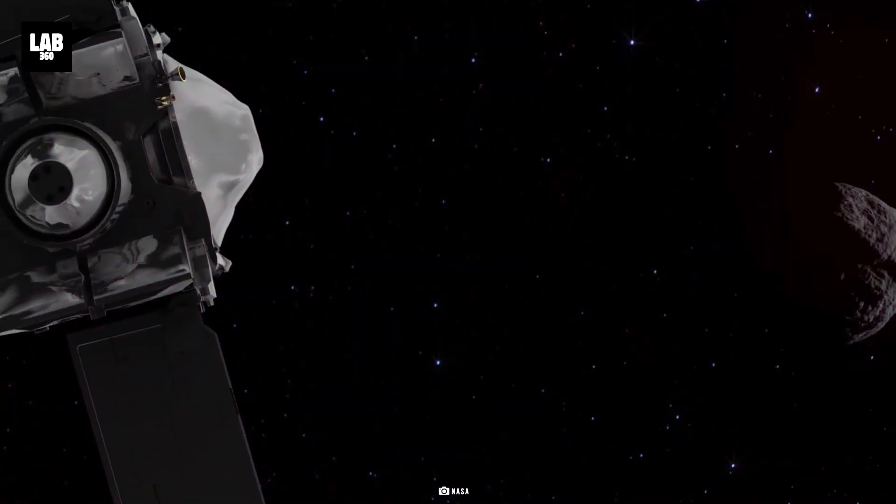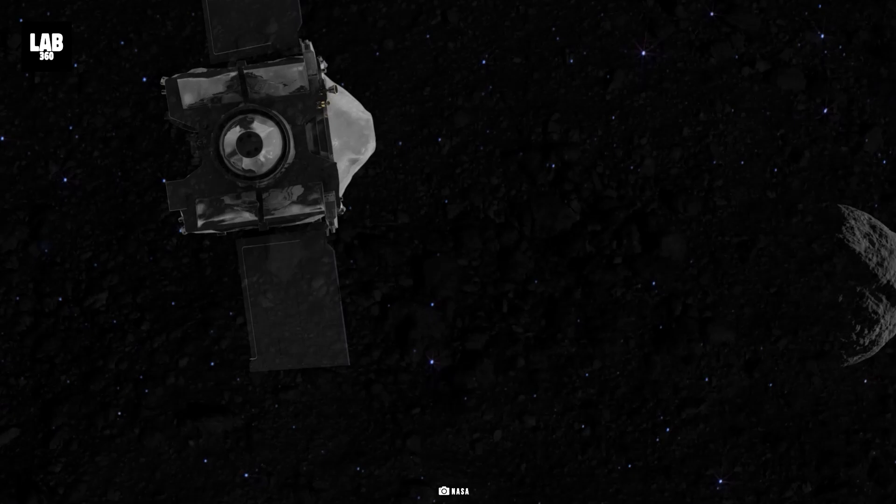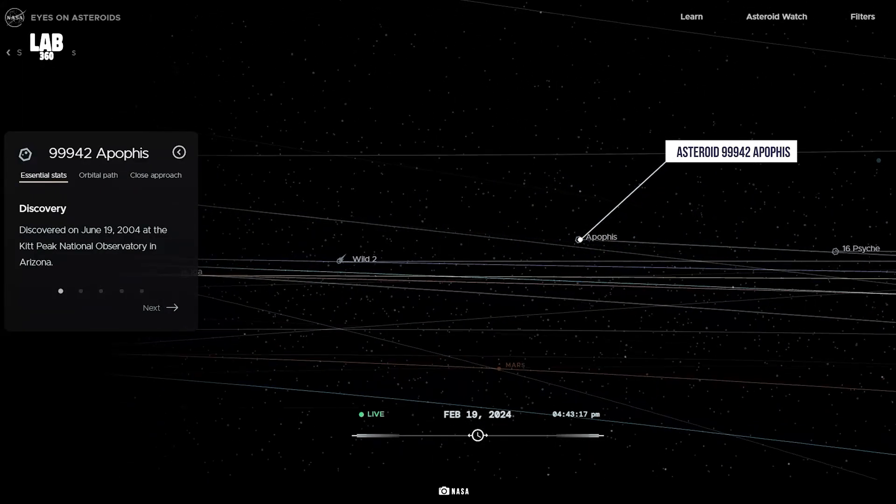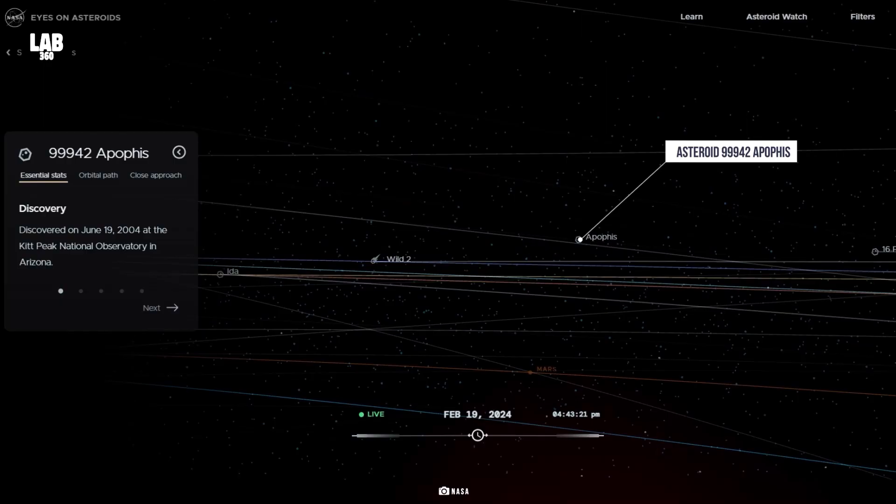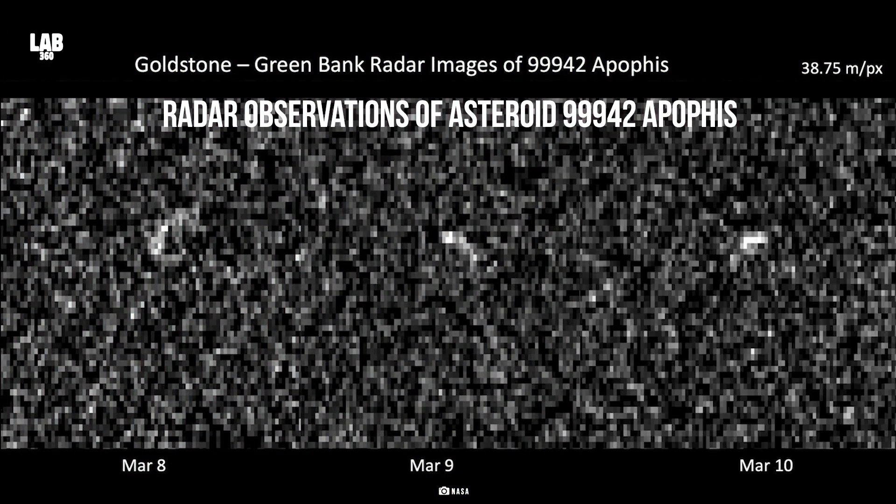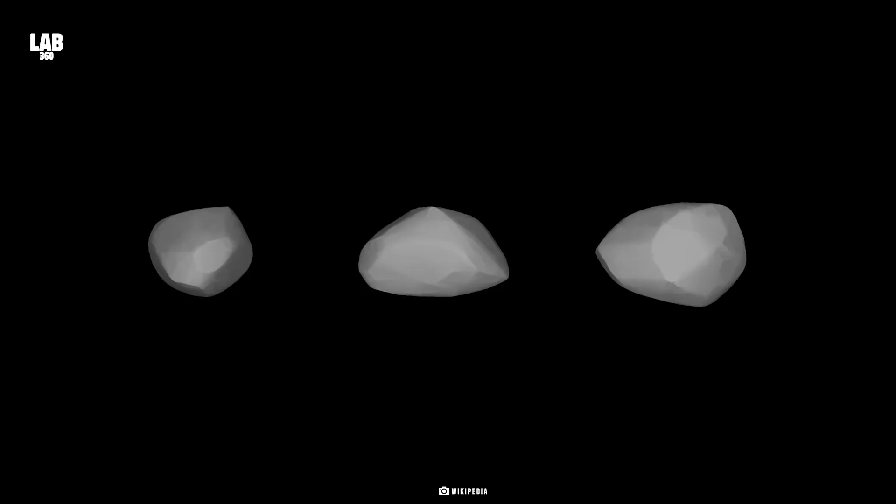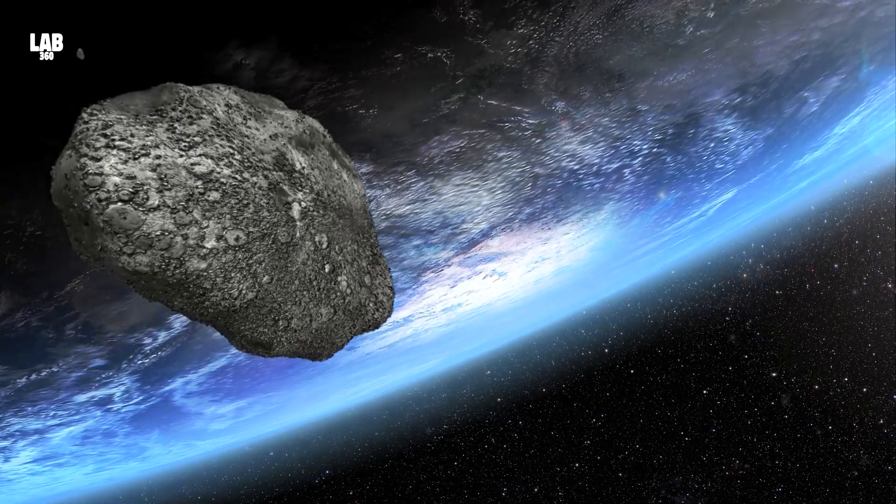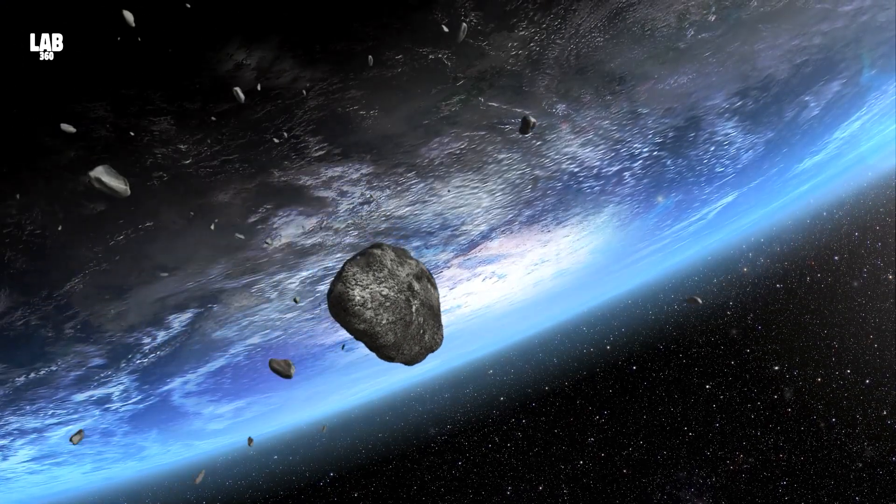The spacecraft after dropping samples from Bennu has been sent off to asteroid 99942 Apophis for sample collection. Another near-Earth object that will be uncomfortably close in 2029. It is approximately 1,100 feet in width and is estimated to pass less than 20,000 miles from our planet's surface, making it visible to the naked eye.